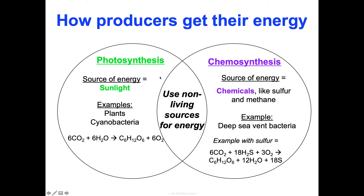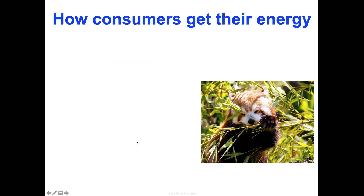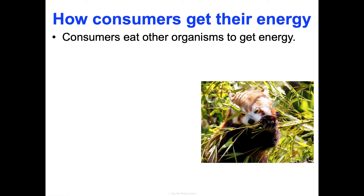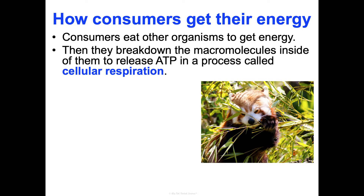The ultimate source of energy for all life on Earth is the sun. Plants and other producers mainly do photosynthesis to capture that energy, storing glucose that consumers like us can then access. We get our energy from eating other organisms, break down the macromolecules inside what we ate, and convert that energy into a usable form called ATP in a process called cellular respiration, which we'll spend all of concept five on.